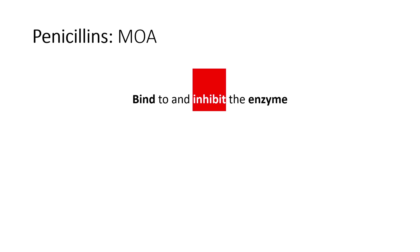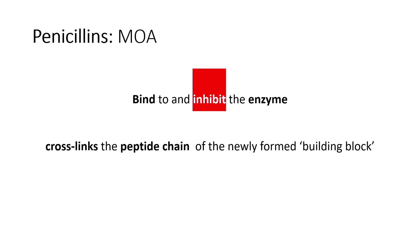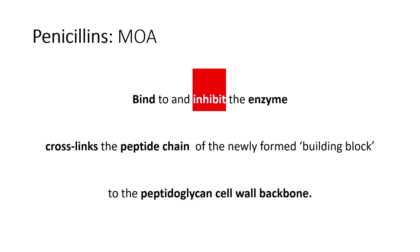Coming to the mechanism of action: penicillin will bind to a particular enzyme and inhibit the activity of that enzyme, which is required for cross-linking of peptide chains. Penicillin binds and inhibits the enzyme responsible for cross-linking the peptide chain of the newly formed building block to the peptidoglycan cell wall backbone. That enzyme is called transpeptidase.